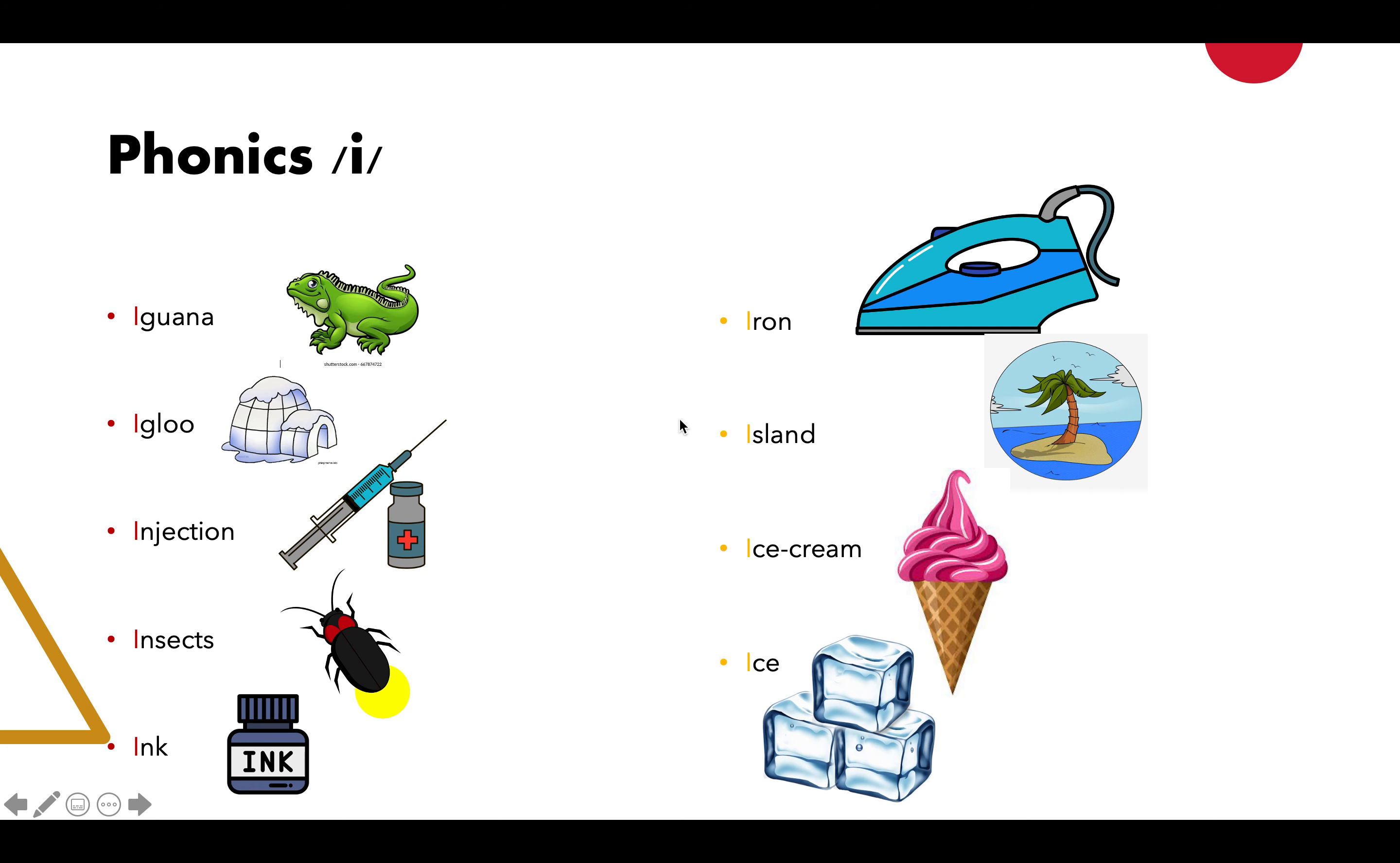Next one: iron, island, ice cream, ice. Saya harap awak boleh bezakan dua bunyi huruf /i/ iaitu /e/ dan /i/. Dan untuk hari ni saya nak awak salin ni dalam buku tulis.